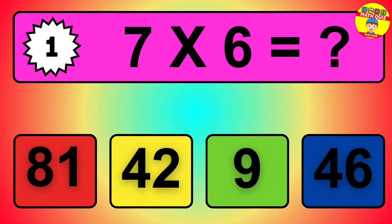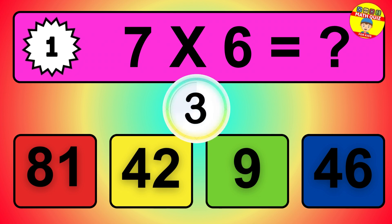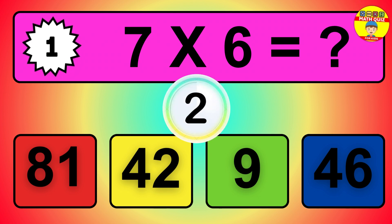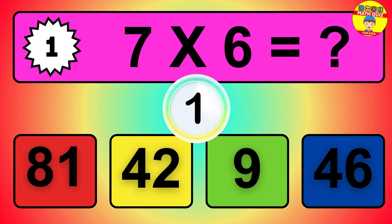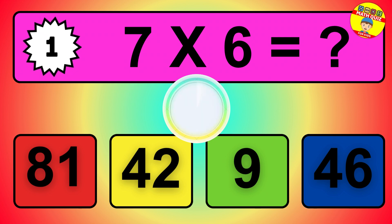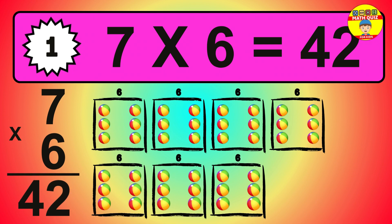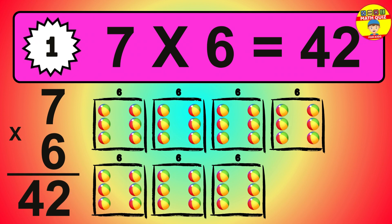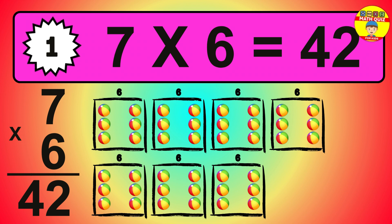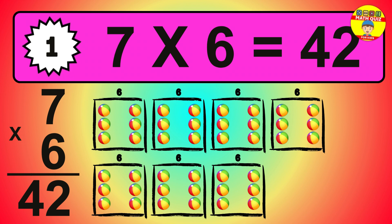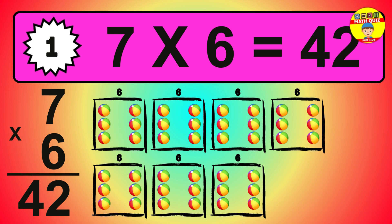Question 1. 7 times 6 equals what? The answer is 7 times 6 is 42. To calculate, we have 7 groups with 6 balls each one. So how many balls do we have? 42 balls.